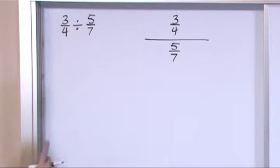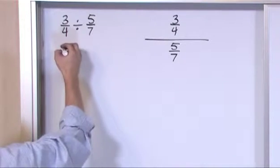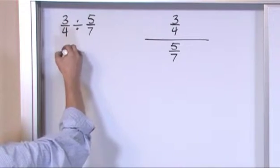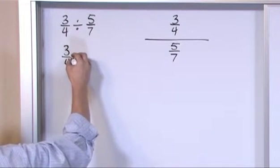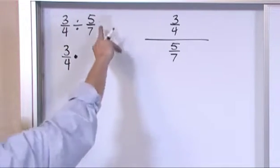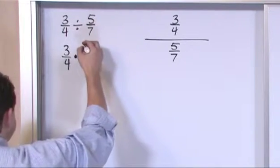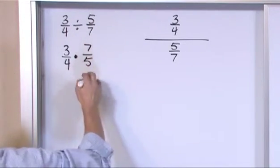Now here's all you do when you're confronted with the division problem. You take the first fraction, you write it down, 3 fourths. You change this division into a multiplication. You can do that. But then you take the second fraction, you flip it over. 7 fifths.